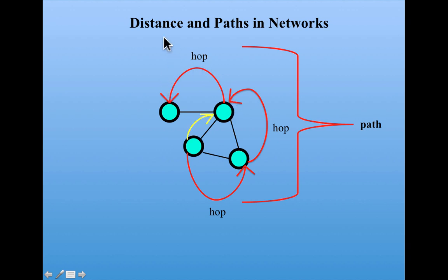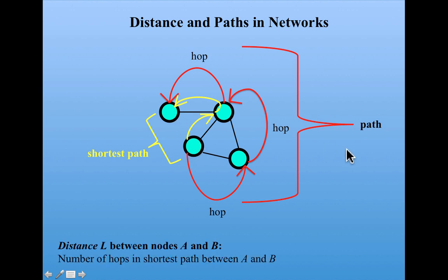But that's not the only path. We can find a shorter path from this node to this node that goes through this middle node of two hops. And in fact, this is the shortest path in this network from this node to this node. We can define the distance between two nodes, A and B, as the number of hops in the shortest path between A and B.